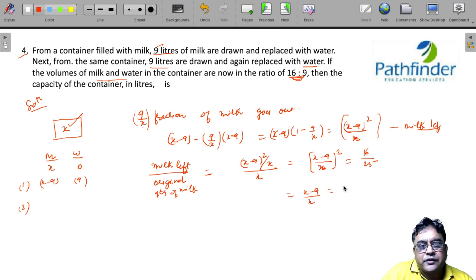You will get this is equal to 4 by 5. 4x equals 45. x is equal to 45. So I hope you are able to understand how the value of initial capacity of the vessel is equal to 45.